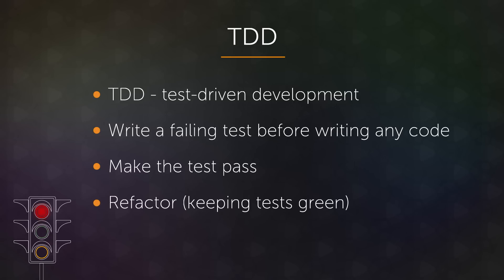Writing a failing test first is the step where you go red. The reason they say you go red is because the terminal output is literally red — most terminal test runners, browser test runners, and IDE test runners show failing tests as red. And then when you make the test pass, the output becomes green, and then you refactor.